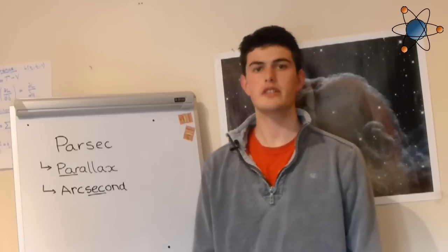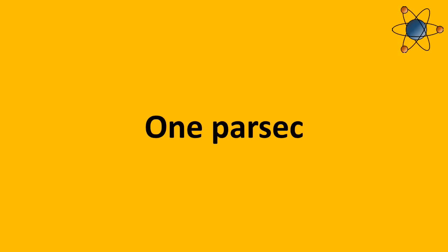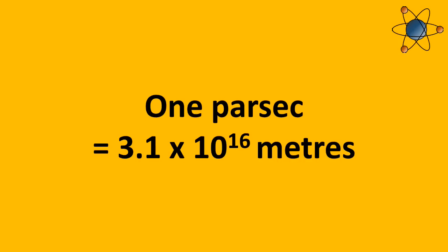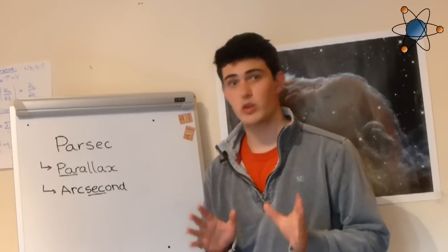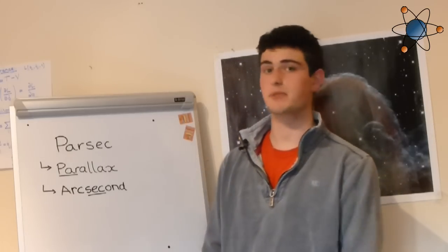A parsec is the largest unit of distance used by astronomers and is equal to about 3.1 times 10 to the power of 16 meters or 3.3 light-years. That's a whopping three quadrillion London double-decker buses stretched out into space.